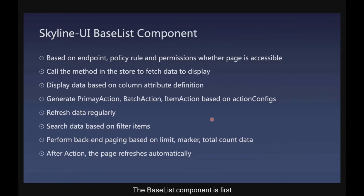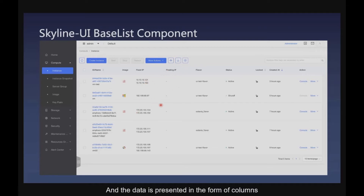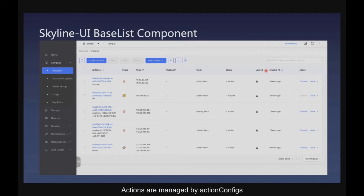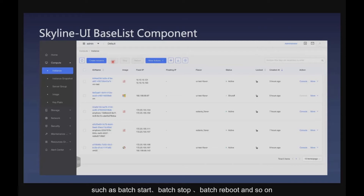The base list component is first. Whether this page is accessible depends on endpoint policy rules and permissions. The displayed data is fetched by calling methods in the store, and the data is presented in the form of columns. Actions are managed by action configs. For example, independent operations are managed by primary action — such as create instance action above the table. Batch operations are managed by batch action — such as batch start, batch stop, batch reboot, and so on.